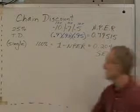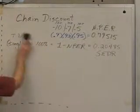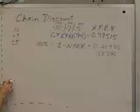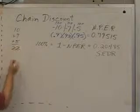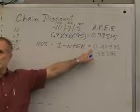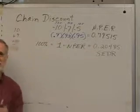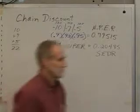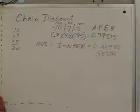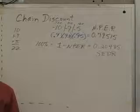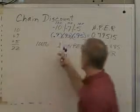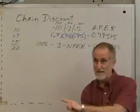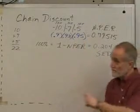Now, notice that 10 plus 7 plus 5 is how much? 22? Did we actually save 22%? No. Why not? Look at the summary page there. Notice in the middle column, it says successively lower base. In other words, this 10% was taken off $400. But this 7% was not taken off $400. It was taken off a smaller base. And then this 5% was taken off an even smaller base.